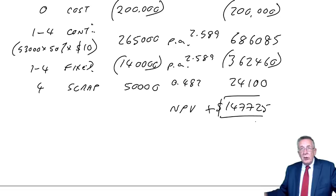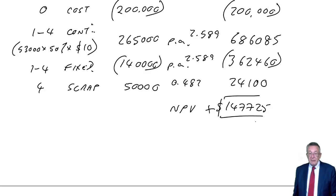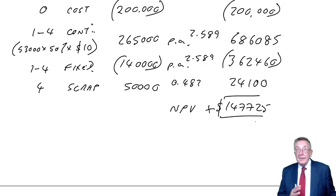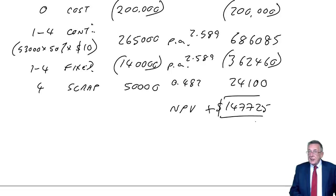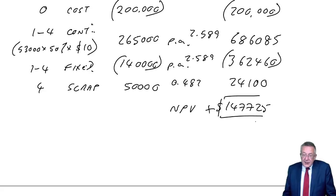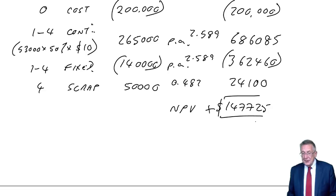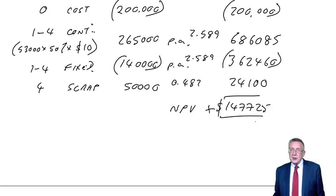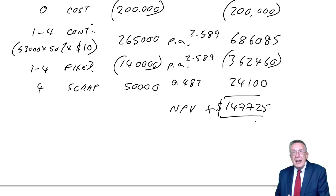Those three things we've discussed — expected value, simulation, and sensitivity — really should have been revision. The last thing in this chapter is something rather different: value at risk. It wasn't asked in the previous Financial Management exam. I'll go through and explain what we mean by value at risk in the next lecture.